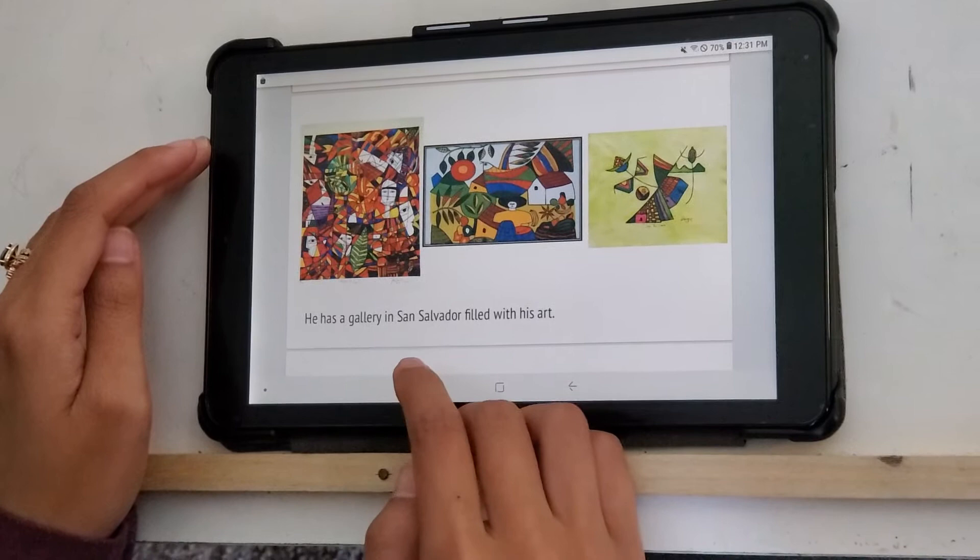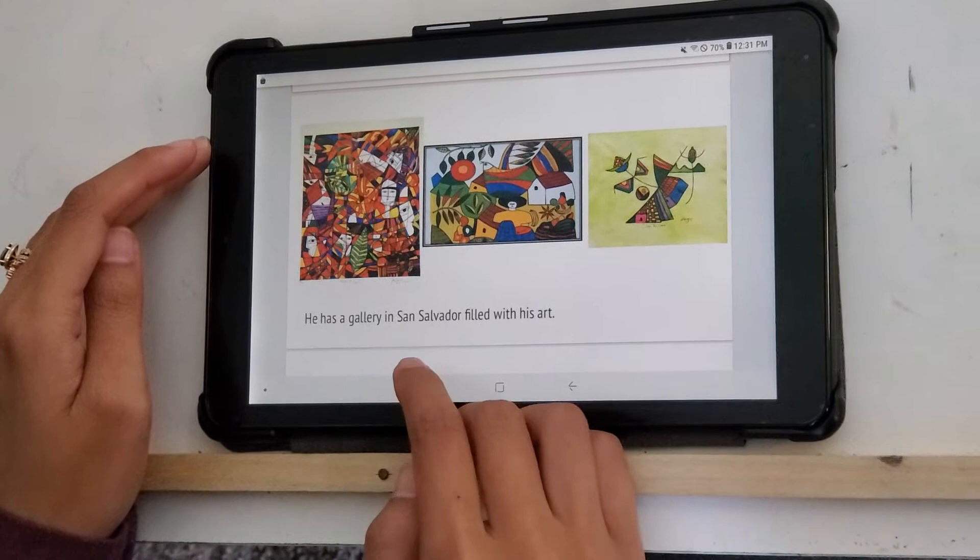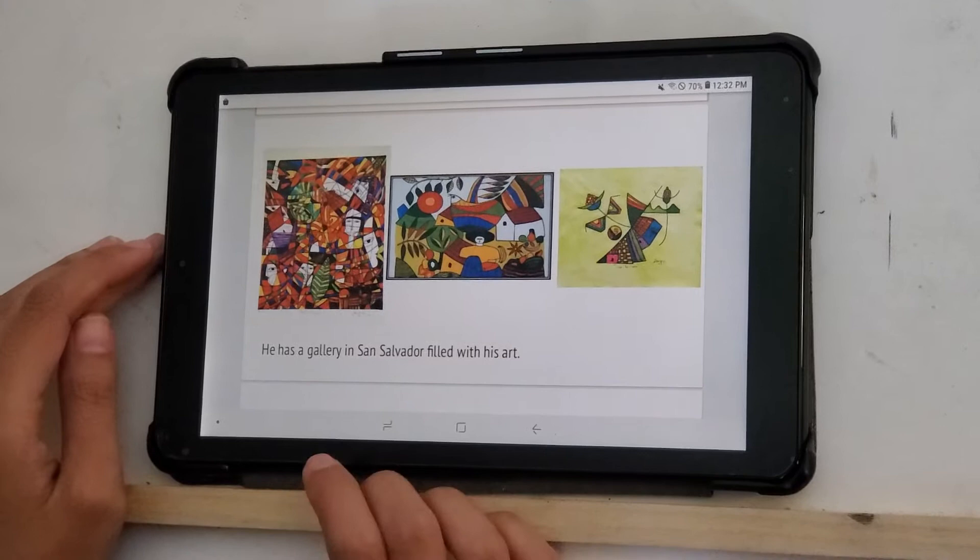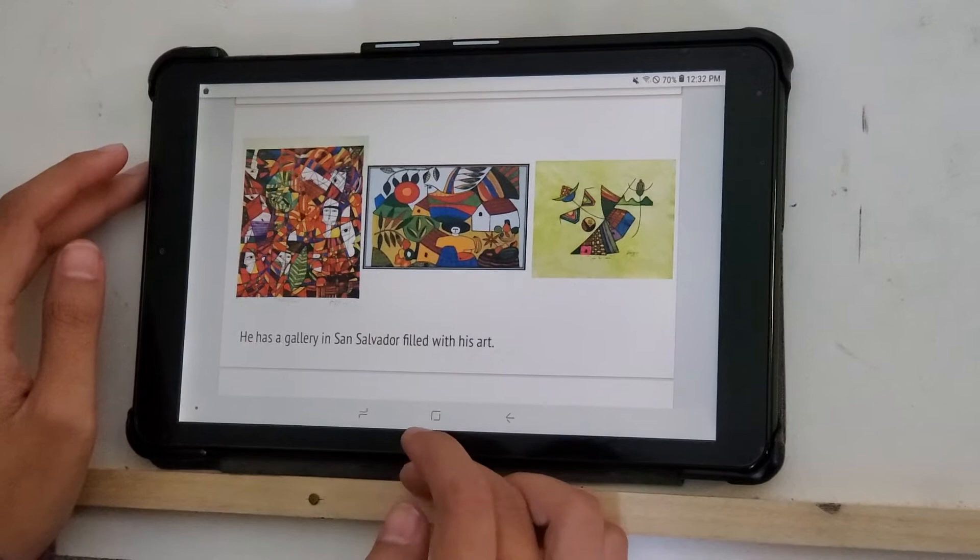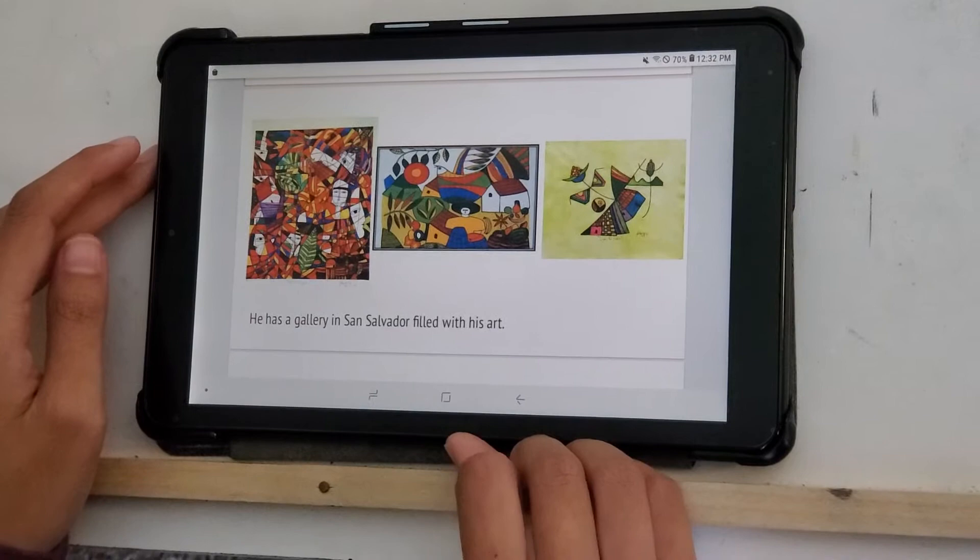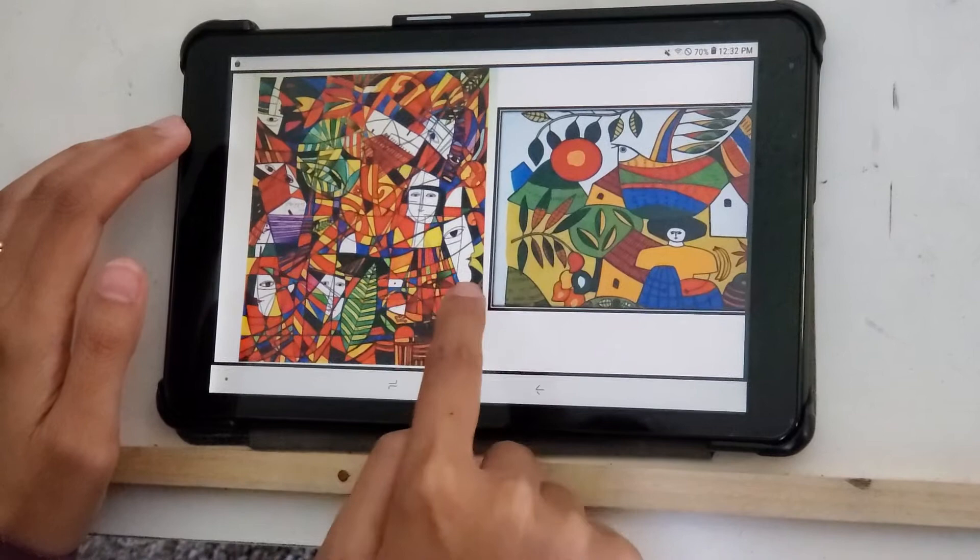He has a gallery in San Salvador that is filled with his art. So a gallery is a place where a lot of artwork is put on display for people to see. You can walk around it and just look at all of the artwork that an artist or a group of artists has made. So here are just some close-ups of some of his artwork.